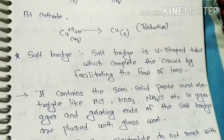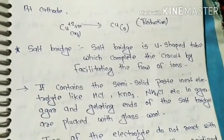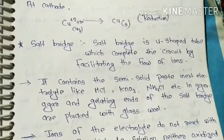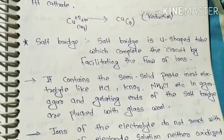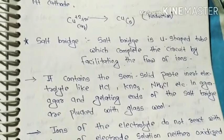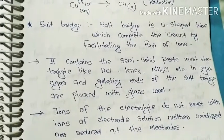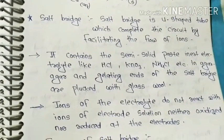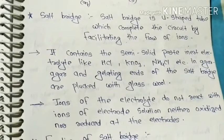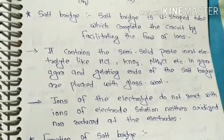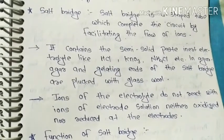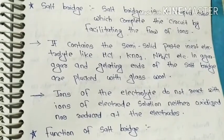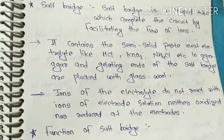Now let's see the salt bridge. What happens in it and how it works? Salt bridge is a tube which completes the circuit by facilitating the flow of ions. It contains the semi-solid paste inert electrolyte like HCl, KNO3, NH4Cl, etc., in agar agar and gelatin. The ends of the salt bridge are plugged with glass wool.